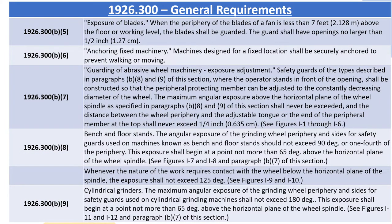1926.300(b)(5) Exposure of Blades: When the periphery of the blades of a fan is less than seven feet (2.128 meters) above the floor or working level, the blades shall be guarded. The guard shall have openings no larger than half an inch (1.27 centimeters). 1926.300(b)(6) Anchoring Fixed Machinery: Machines designed for a fixed location shall be securely anchored to prevent walking or moving. 1926.300(b)(7) Guarding of Abrasive Wheel Machinery.